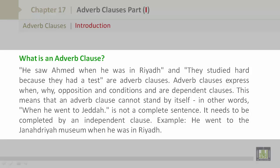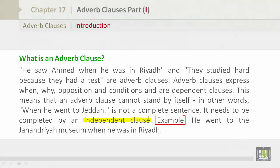In other words, 'when he went to Jeddah' is not a complete sentence. It needs to be completed by an independent clause. For example: 'He went to the Janadri Museum when he was in Riyadh.'